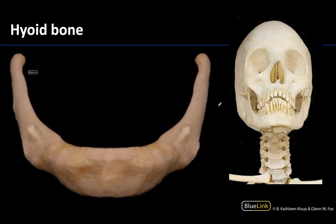The hyoid bone is going to be located in the anterior part of the neck. This is going to be the mandible, and these will be some cervical vertebrae.